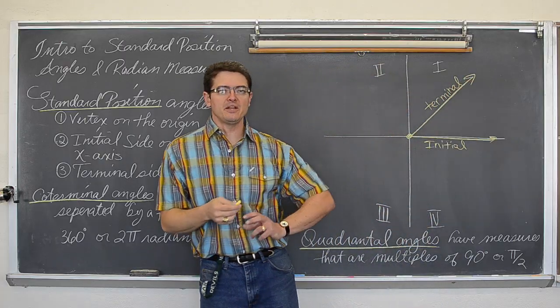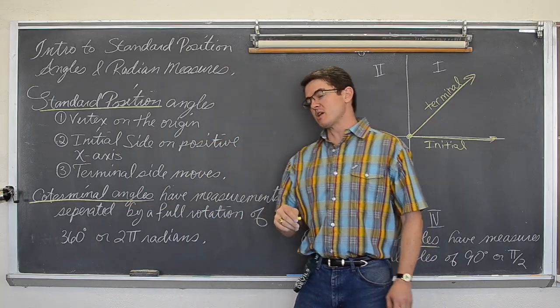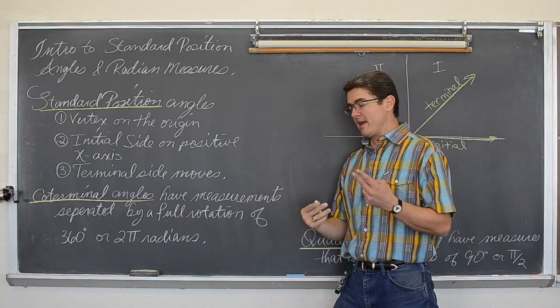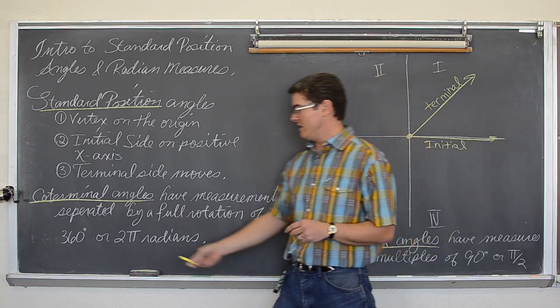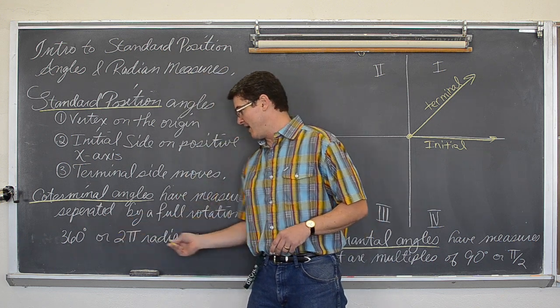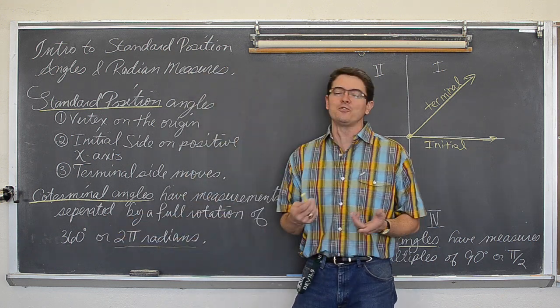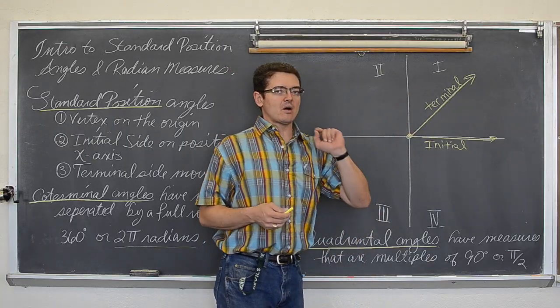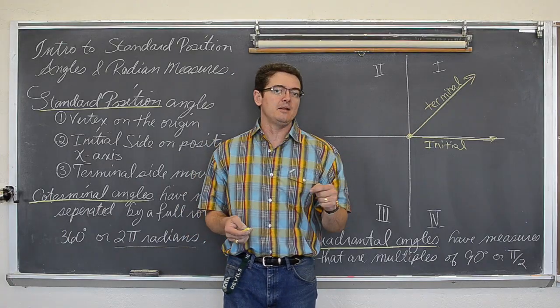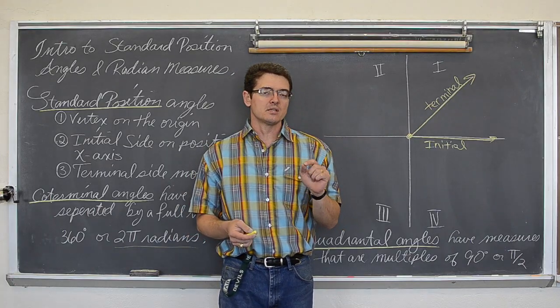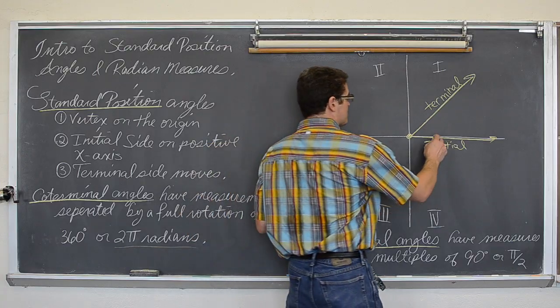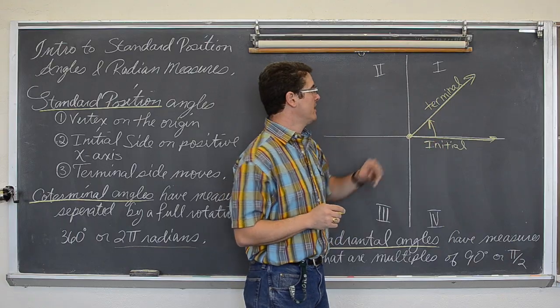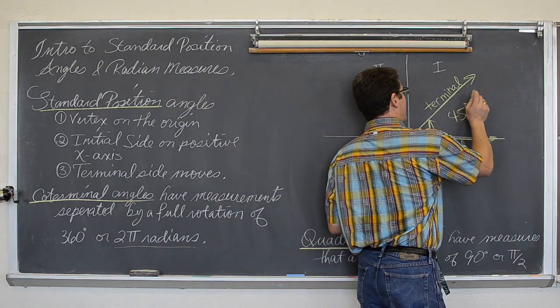Well that is fine, but that is an incomplete picture because one of my other definitions I have to talk about is coterminal angles. And those are angles that have measurements that are separated by a full rotation of either 360 degrees or 2 pi radians. Now I need to add an extra part to this diagram to indicate what direction the rotation is and how much rotation there is. So I am going to draw a little arc. That is going to indicate counter clockwise rotation. And I did say that we were drawing a 45 degree angle.